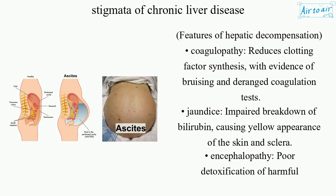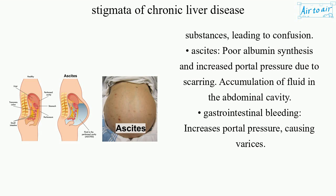Features of hepatic decompensation include Coagulopathy, which involves reduced clotting factor synthesis with evidence of bruising and deranged coagulation tests. Jaundice results from impaired breakdown of bilirubin, causing yellow appearance of the skin and sclera. Encephalopathy results from poor detoxification of harmful substances, leading to confusion.